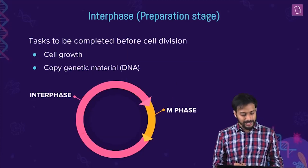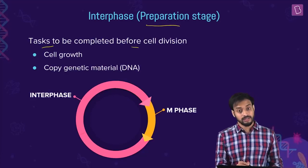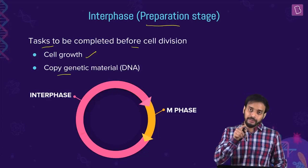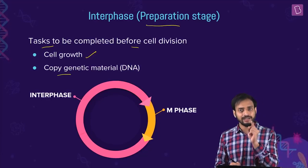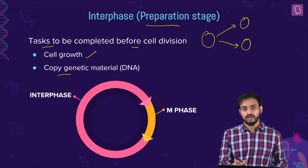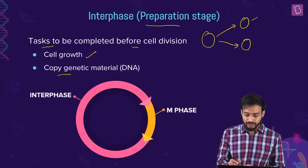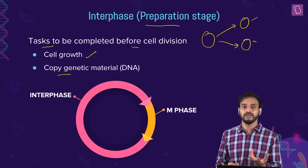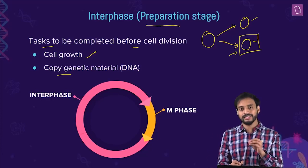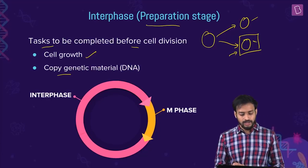Interphase is the preparation stage. The tasks to be completed before cell division are: the cell must grow, and the genetic material — the DNA — must be copied. If the DNA is not duplicated, the daughter cells would not receive the genetic material, and that would cause the cells to die.